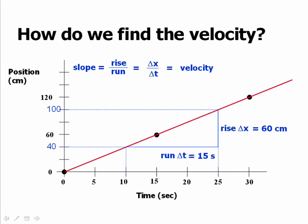If I take that rise of 60 centimeters and divide it by the run of 15 seconds, I get a slope of 4 centimeters per second. What interpretation can I give to that slope? What does the number 4 centimeters per second tell me about the object represented in this graph? To answer this question, I'm going to look at an analogous situation that appears very different.